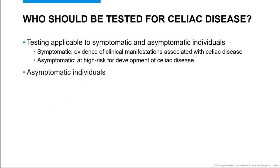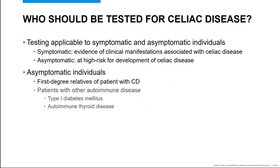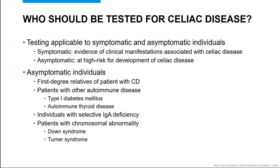Moving now to asymptomatic individuals, we find that most guidelines advocate for testing in first degree relatives of patients with celiac disease and for patients who have been diagnosed with other autoimmune diseases such as type 1 diabetes or autoimmune thyroid disease. Some guidelines also identify persons with selective IgA deficiency, as this phenotype occurs more frequently in patients with celiac disease compared to the general population. Lastly, individuals with certain chromosomal abnormalities such as Down syndrome or Turner syndrome should be considered for testing even in the absence of obvious clinical symptoms.